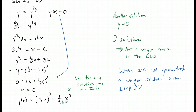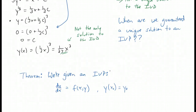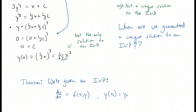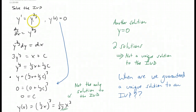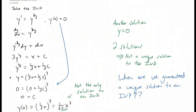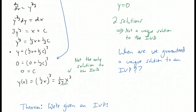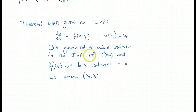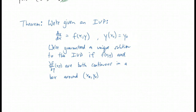The answer is given to us in a theorem. The theorem takes a little bit of setup. We're given an initial value problem in the form y prime equals some function of x and y, with an initial condition y of x-naught equals y-naught. We're guaranteed a unique solution to the initial value problem if f of x, y and its partial derivative with respect to y are both continuous in a box around our initial point.